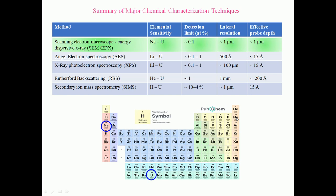Elements with Z less than 11—hydrogen, helium, lithium, beryllium, boron, carbon, nitrogen, oxygen, fluorine, phosphorus, neon—cannot be analyzed by EDS. For analyzing such light elements, alternatives include AES (lithium to uranium), XPS (lithium to uranium), RBS (helium to uranium), and SIMS (even hydrogen). The detection limit is approximately the same across most techniques, but the elemental sensitivity range differs. With EDS, we can analyze elements between sodium and uranium.